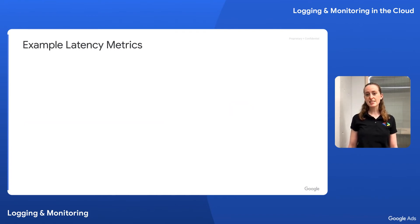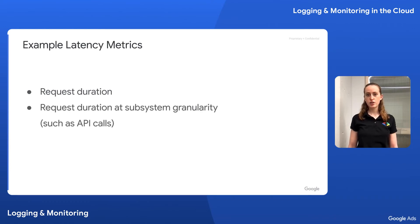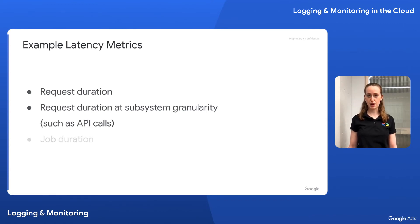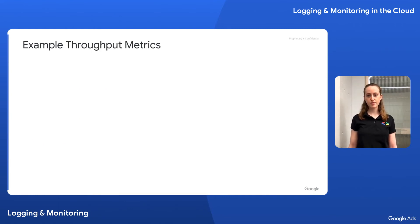Some examples of latency metrics include request duration, or the amount of time it takes a user to see results after triggering an event; request duration at the subsystem granularity, such as how long it takes for an individual API call to return a response; and job duration, which may consist of multiple API calls and other work.